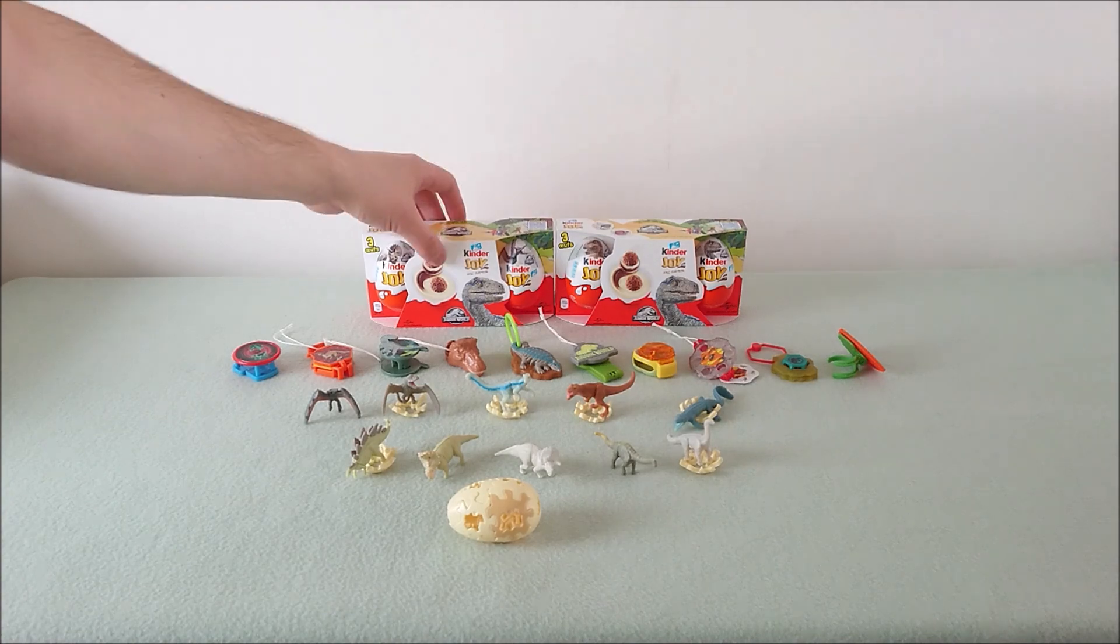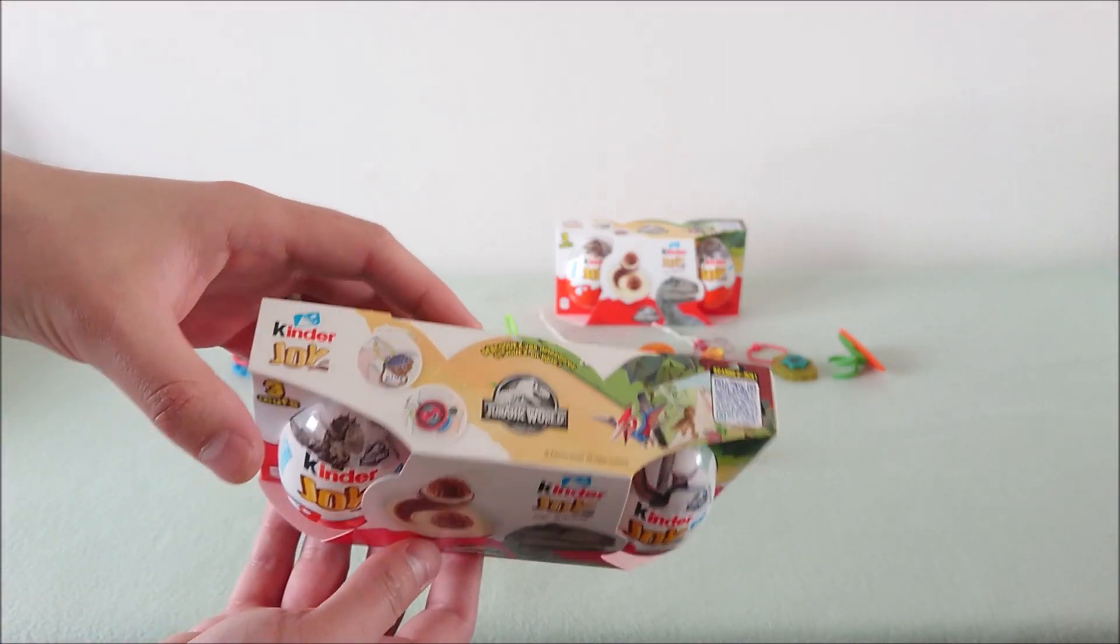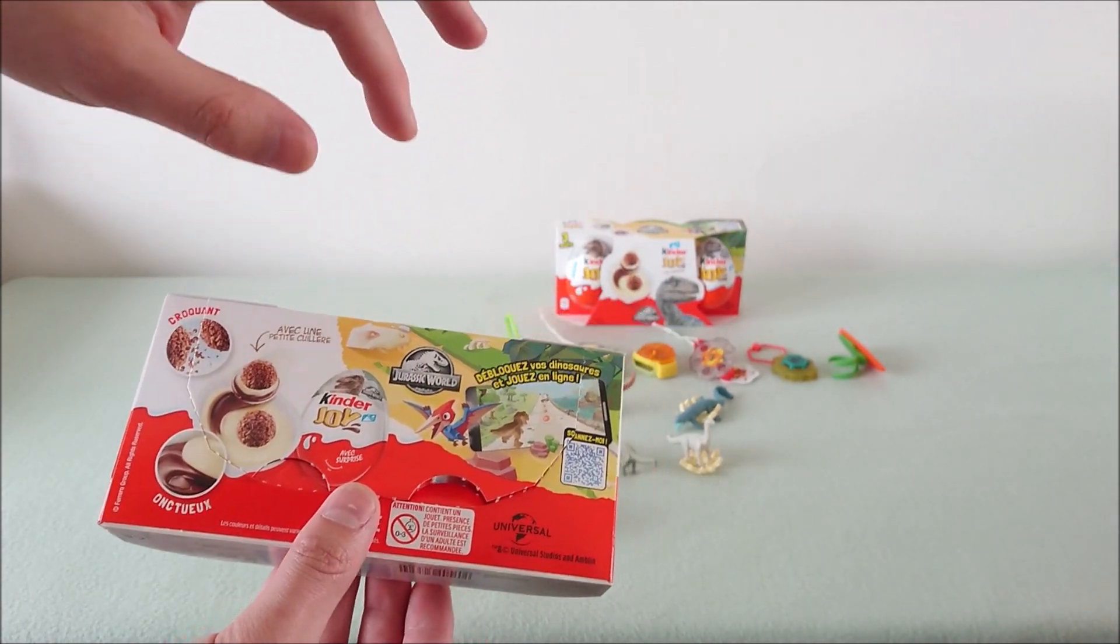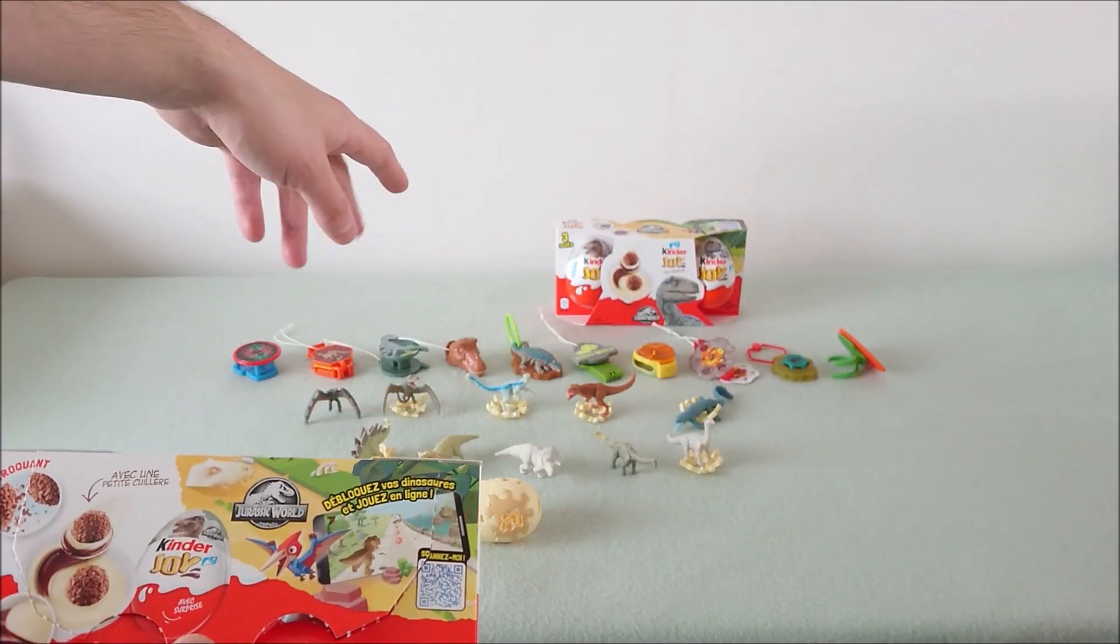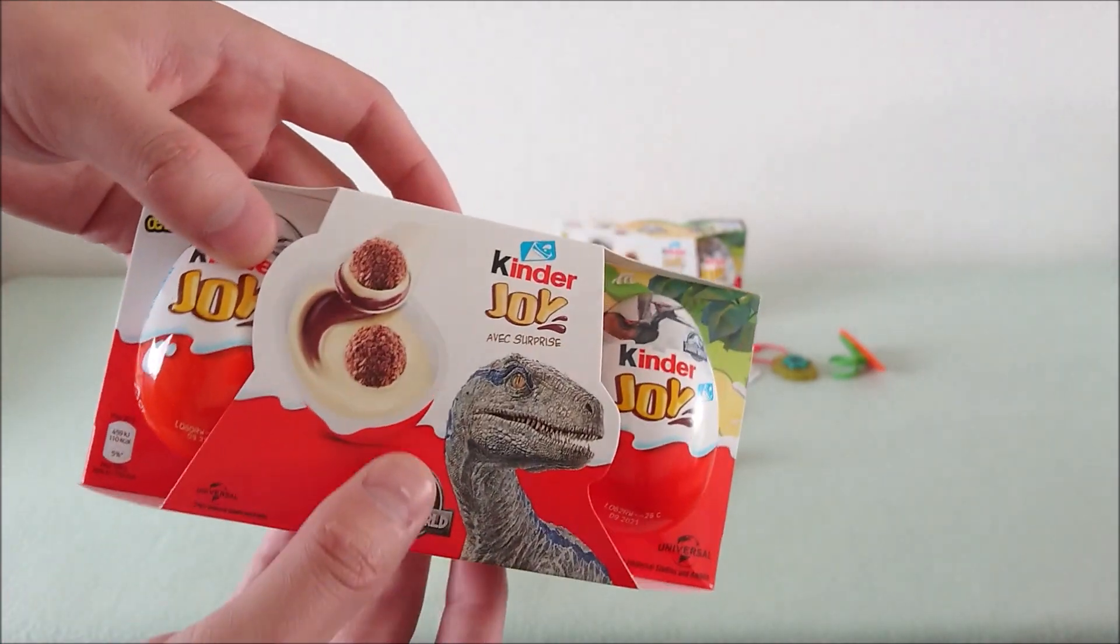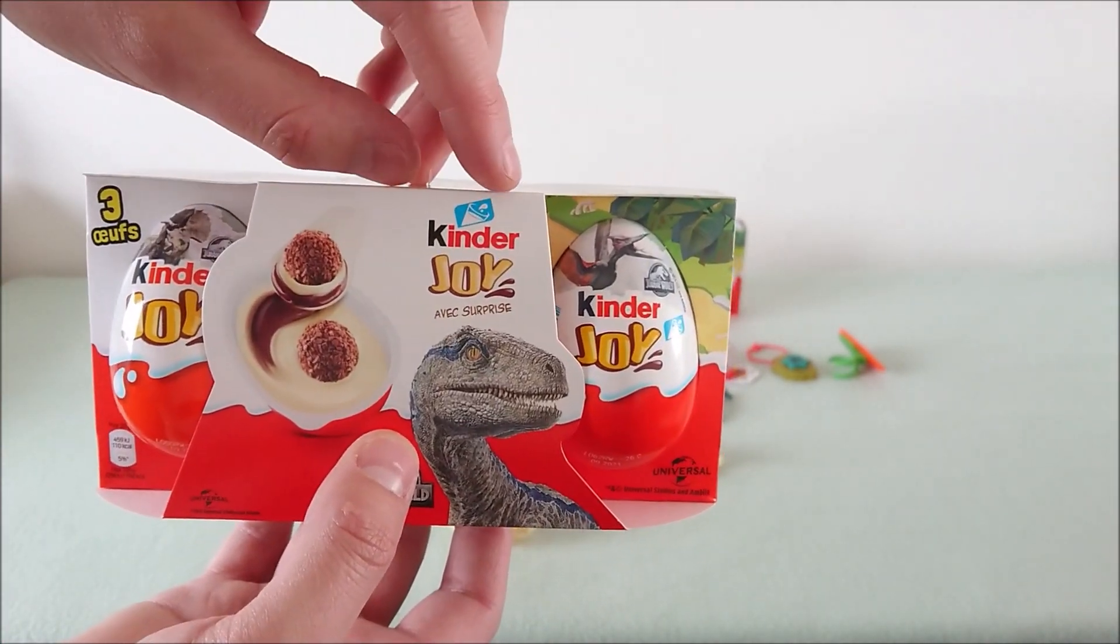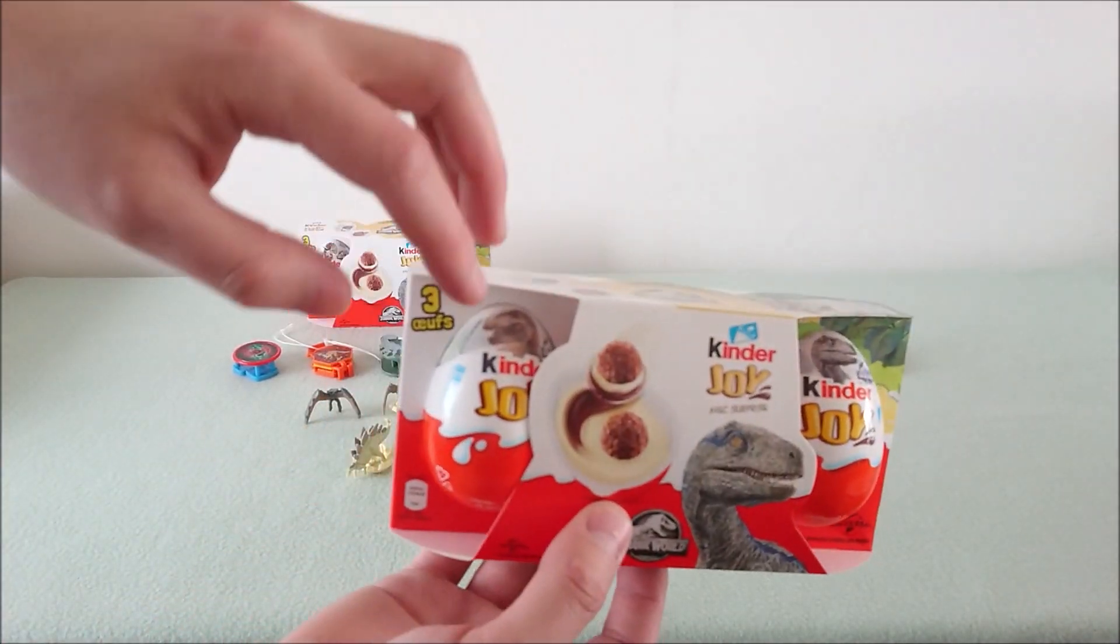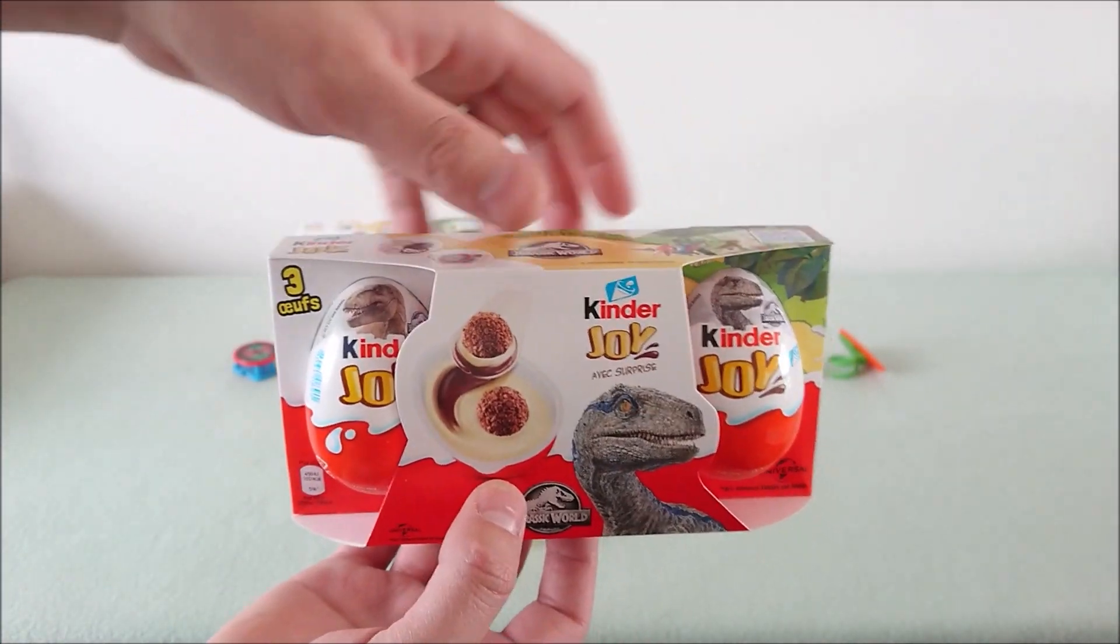So let's start with the box. Very cool design, branded Jurassic World. Per box, you have one minifigure and two other gadgets. You have four shells to collect: Pteranodon, Triceratops, and then you have T-Rex and Velociraptor.